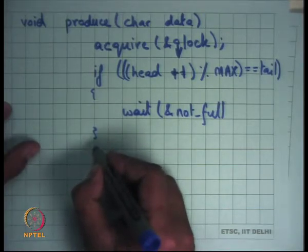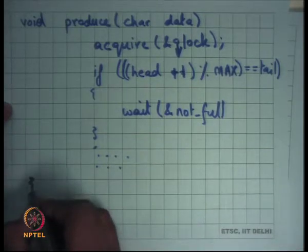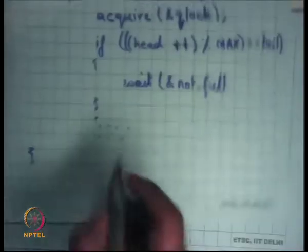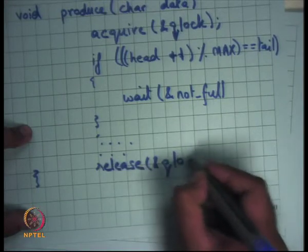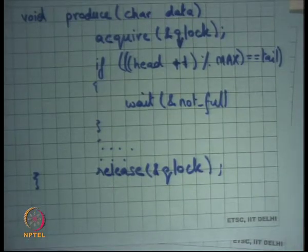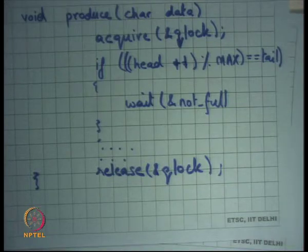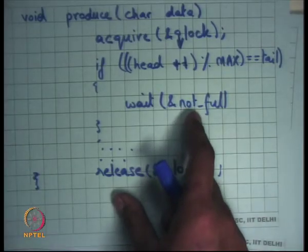There is a problem with this code. One thread acquires the q_lock, finds the queue full, starts waiting on `not_full`, but has not released the lock. If the lock isn't released, there's no hope that a consumer can get the lock. The producer waits on the condition variable, the consumer waits to acquire the lock — you have a deadlock. As was pointed out, you need to release the lock before going to wait.